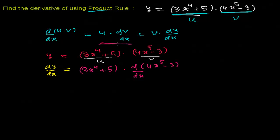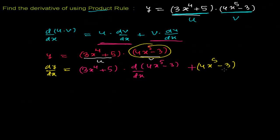Now plus I need to write the second function first: (4x to the power 5 minus 3), and then times the derivative of the first function, which is d/dx of (3x to the power 4 plus 5).